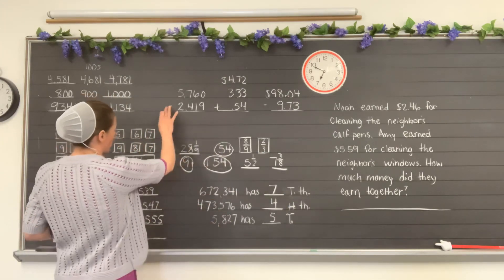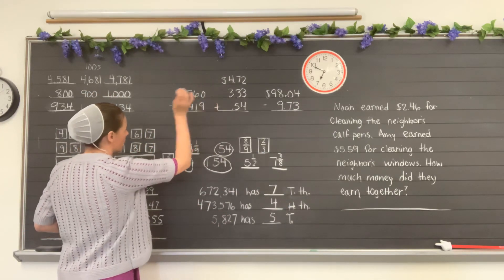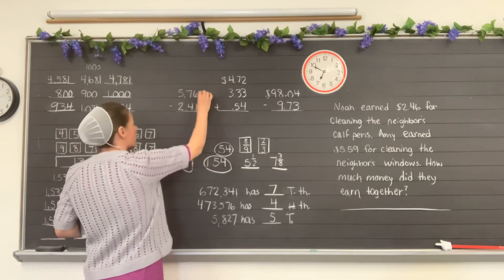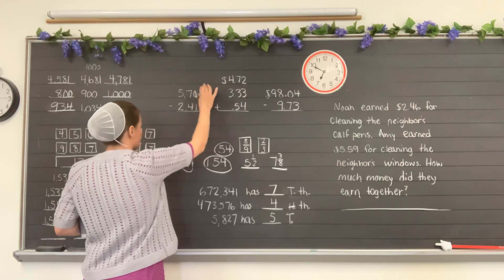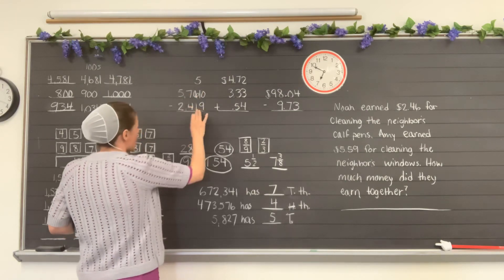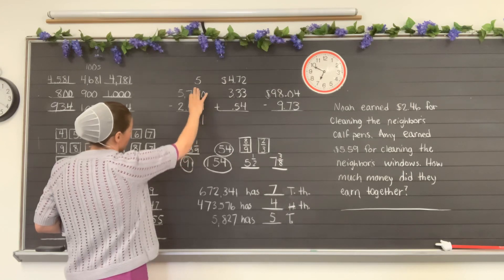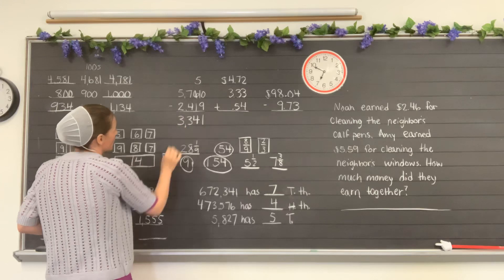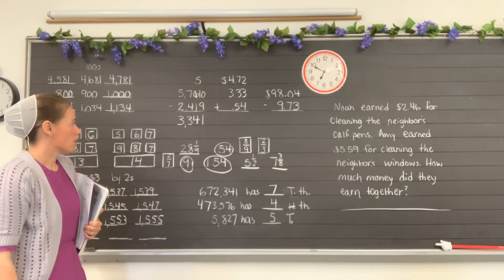Here we have problems again. We need to watch for the minus or the plus sign. 0 minus 9 is... 0 is less than 9 so we'll borrow, cross out, put a 1 beside the 0, cross out the 6, and put a 5 on the top. 10 minus 9 is 1. 5 minus 1 is 4. 7 minus 4 is 3. 5 minus 2 is 3. So my answer is 3,341.